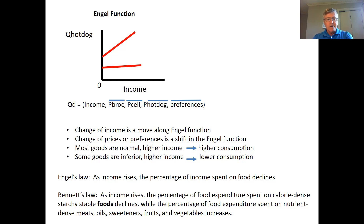Here we're talking about the relationship with income. Some goods are normal — if we have higher income, we want to consume more of them. Some goods are inferior — when we have more income, we actually consume less of them. Inferior goods may be things you don't consider high quality. For example, Kraft dinner: as you have more income, you may not consume more Kraft dinner and might shift that consumption away. Ramen noodles might be another example.